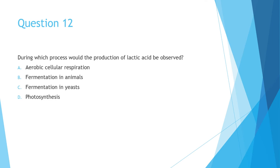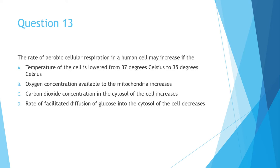Question 12 asks, during which process would the production of lactic acid be observed? And the answer here is fermentation in animals. Lactic acid is the product in anaerobic cellular respiration which occurs in animals. Aerobic cellular respiration utilizes the entire molecule of glucose to produce ATP, so there is no lactic acid byproduct. Fermentation in yeast produces ethanol and carbon dioxide, not lactic acid. And photosynthesis produces glucose. Question 13, still on the topic of aerobic cellular respiration, asks you how the rate can be increased? The correct answer is when the concentration of oxygen in the mitochondria, the powerhouse of the cell, increases. Lowering the temperature, increasing the carbon dioxide concentration, and reducing the rate of glucose transport into the cell will lower the rate of aerobic respiration.